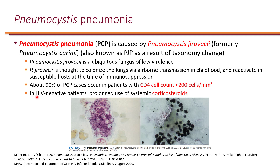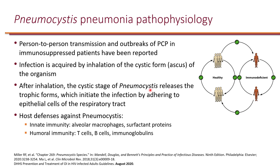Patients who do not have HIV but are on prolonged use of systemic corticosteroids — typically at least 20 milligram equivalent of prednisone for at least four weeks — will also be at risk of PCP, because corticosteroids can also reduce the CD4 count. Transmission is person to person. Healthy people can be colonized with this organism; it just doesn't cause infection in an intact immune system. But immunodeficient people will actually develop the pneumonia.